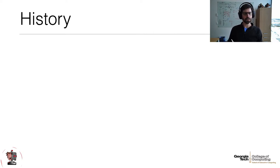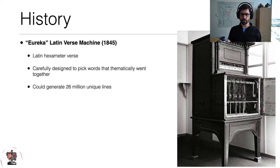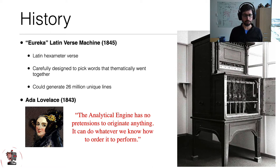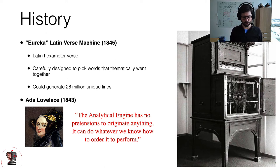I want to set the stage for text generation and creativity in general. The first technology that generated textual art was a poetry generation machine called the Eureka Latin verse machine from the 19th century. This was contemporary with the analytic engine by Charles Babbage and Ada Lovelace. Around this time, Lovelace started thinking about the implications of what it would mean for a computer system to be creative, though the computer wouldn't actually be produced for many years after that.